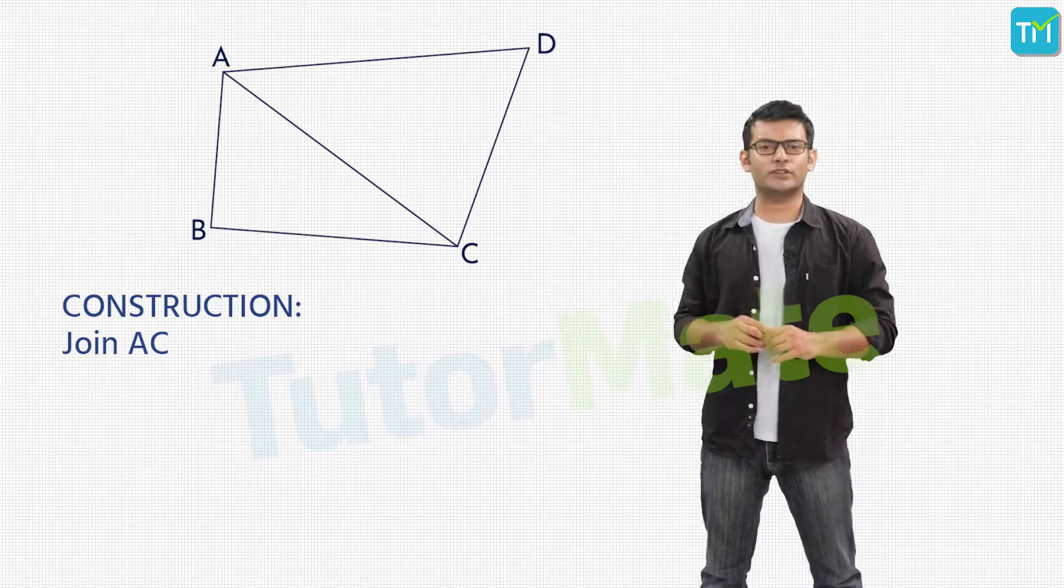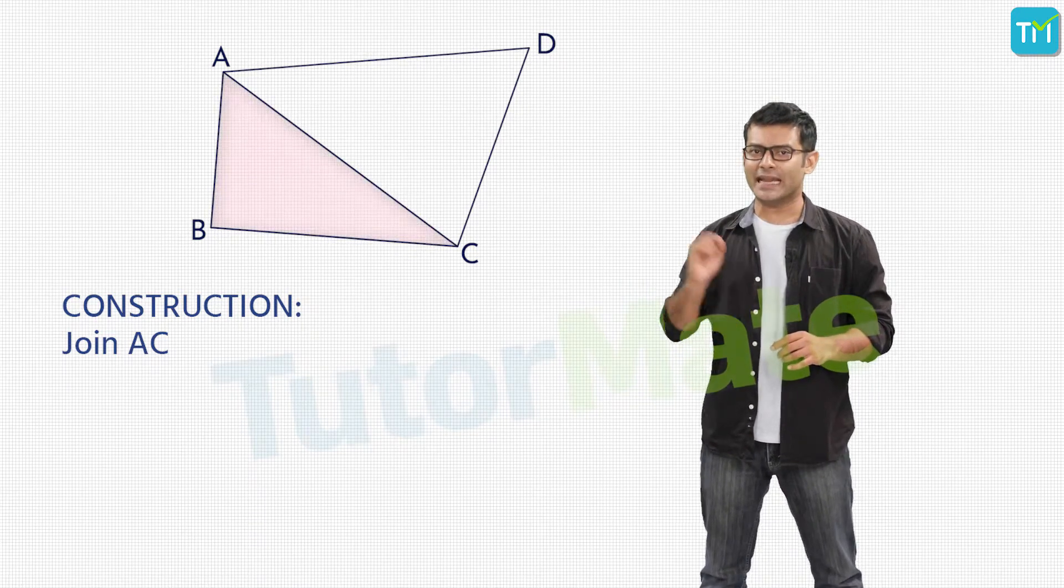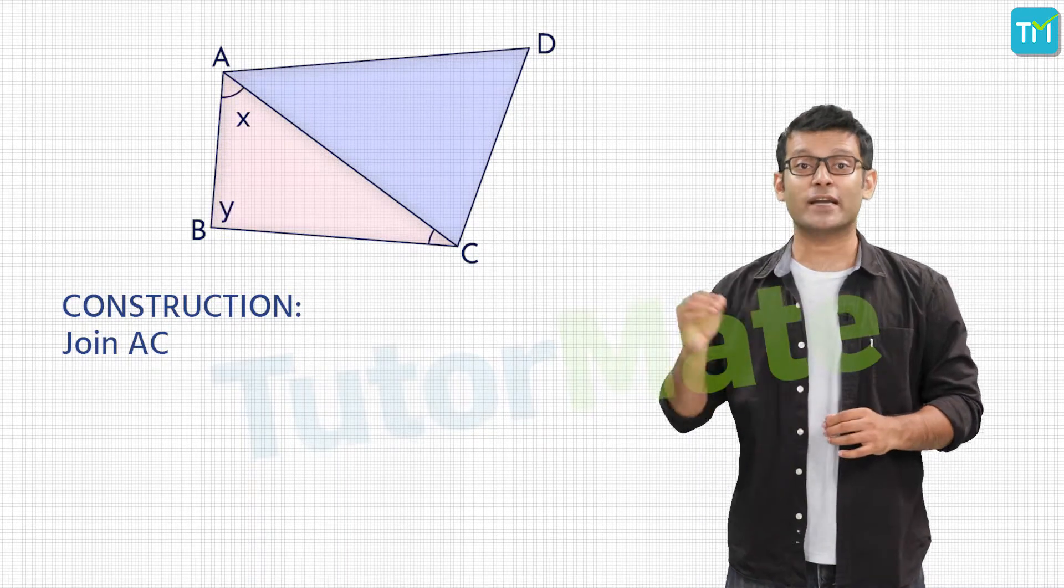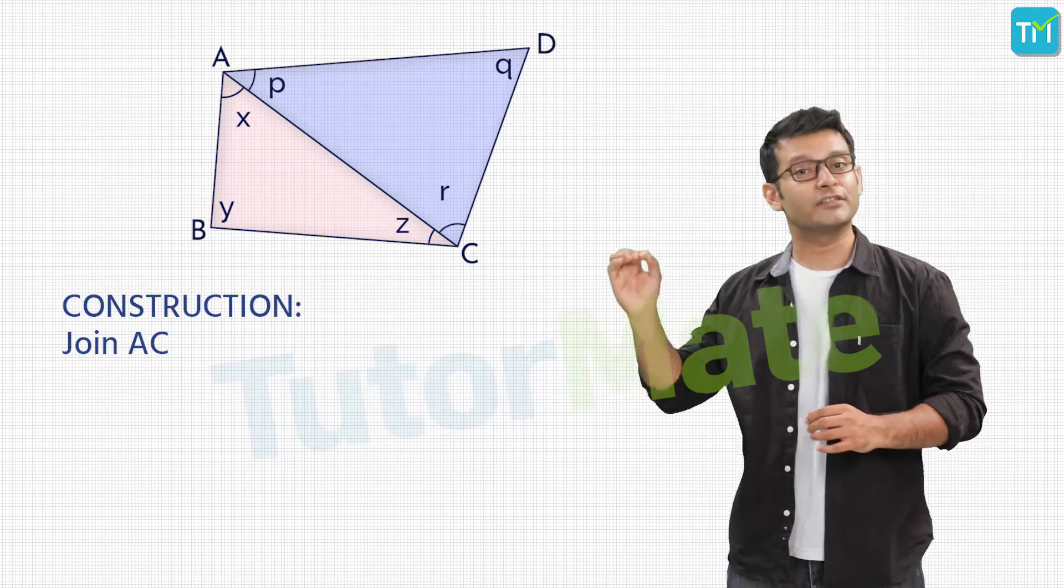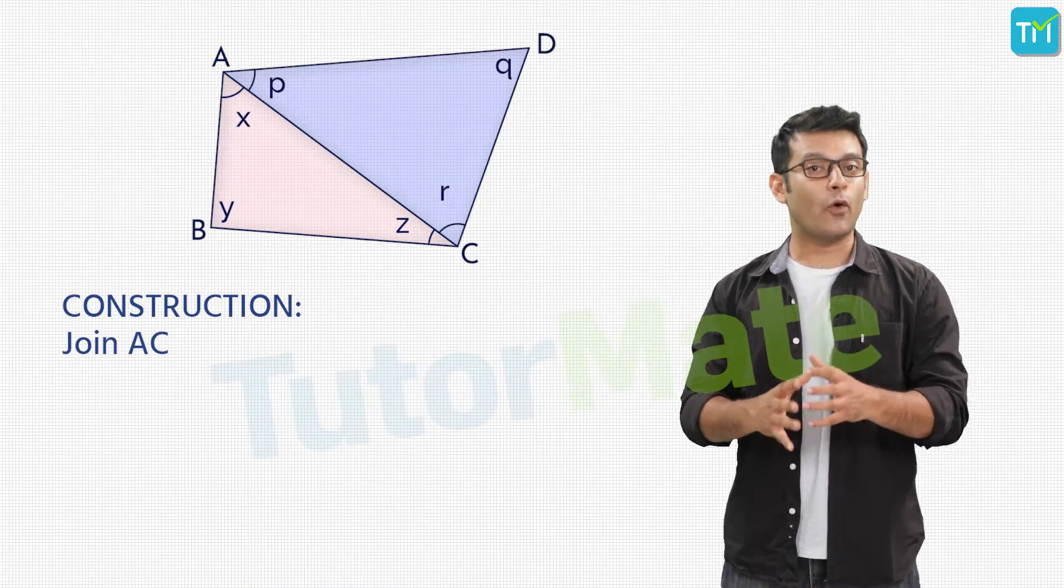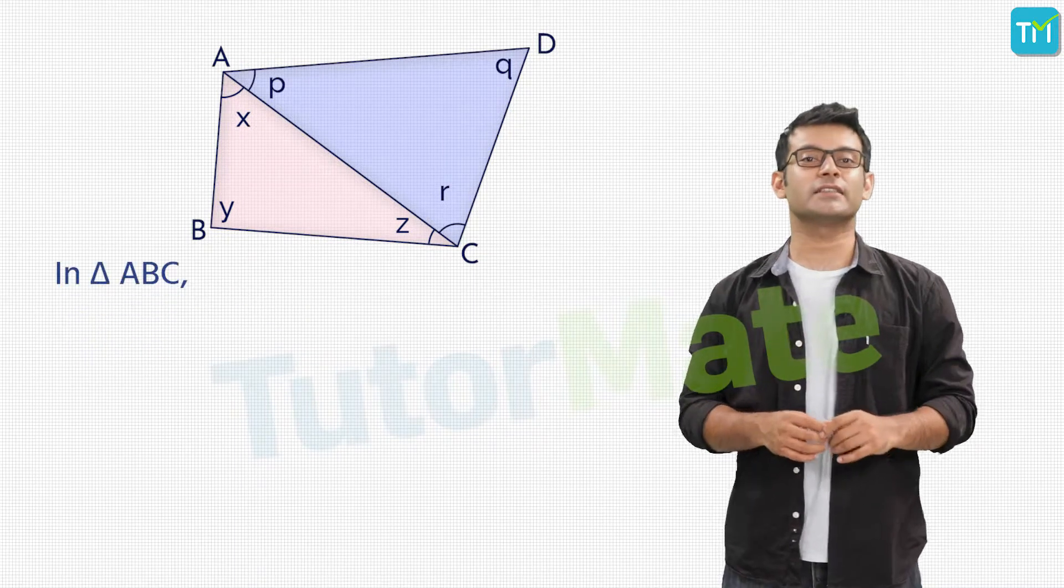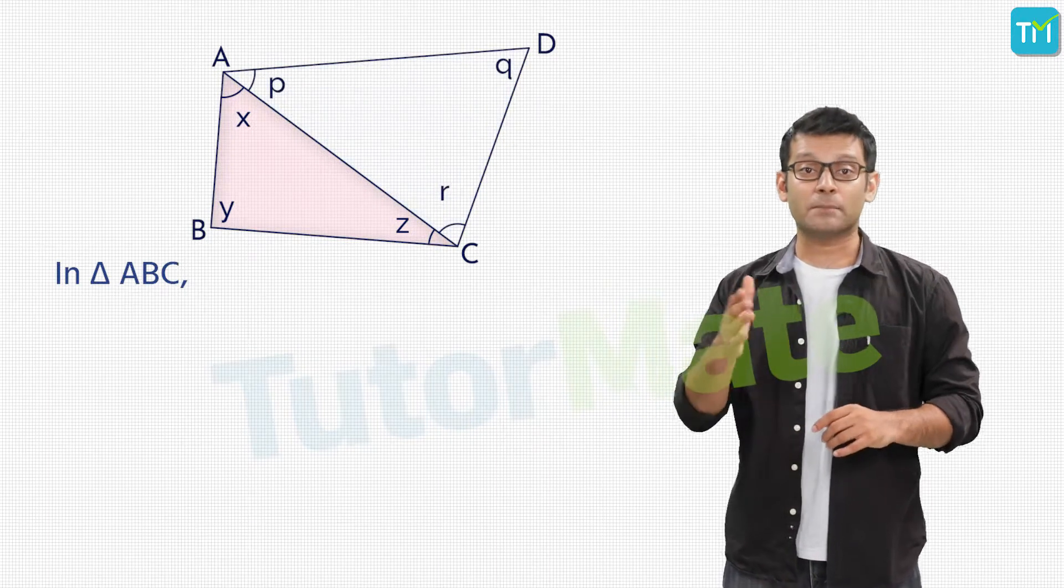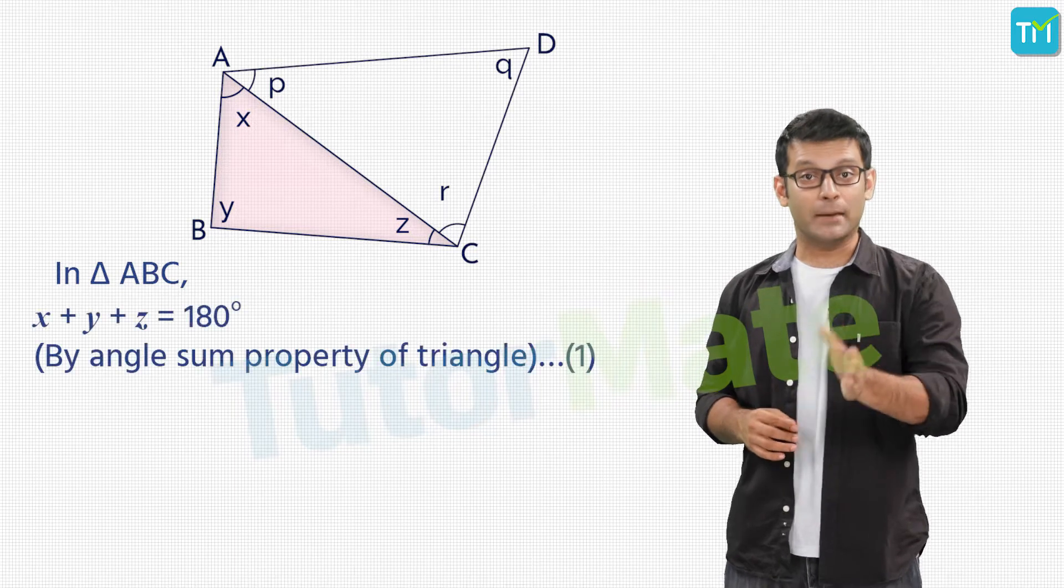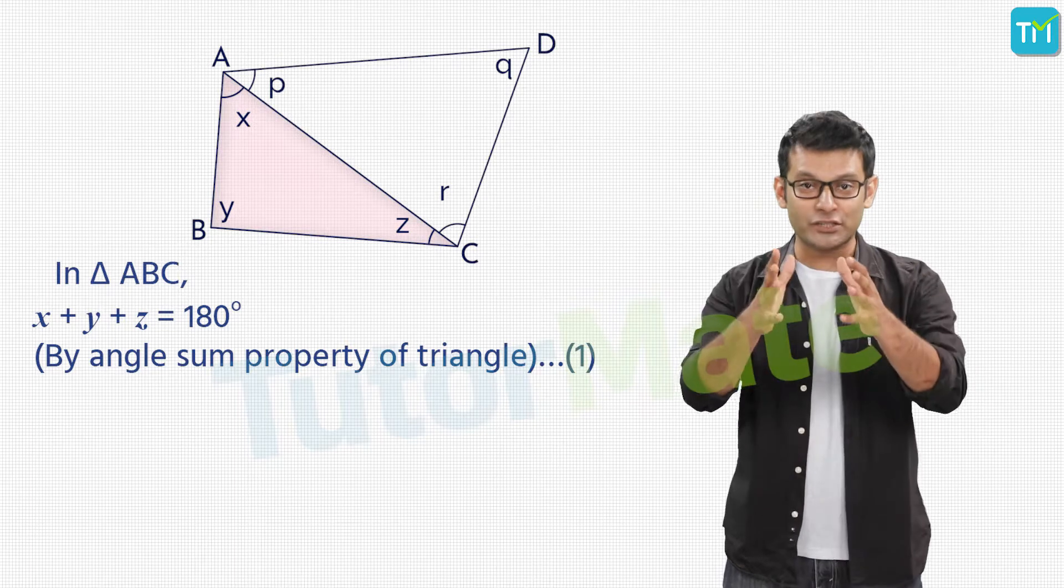Now, if you look at the quadrilateral, you'll see that we have two triangles ABC and ADC. Let's consider the angles of these two triangles as XYZ and PQR respectively. We already know that the addition of all three angles of a triangle is 180 degrees. So let's first consider the triangle ABC and apply the angle sum property to it. We'll get X plus Y plus Z is equal to 180 degrees. Let's call this equation 1.